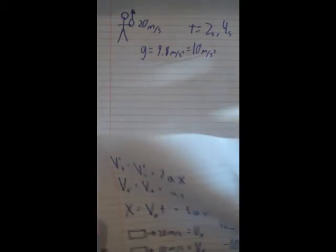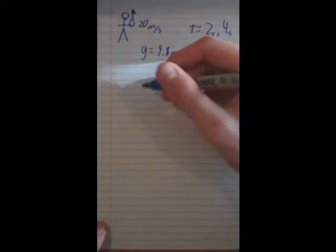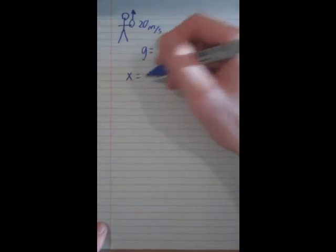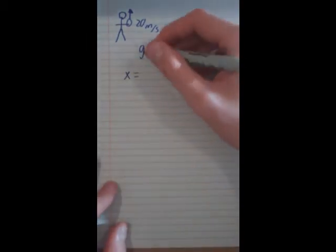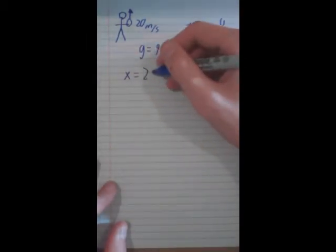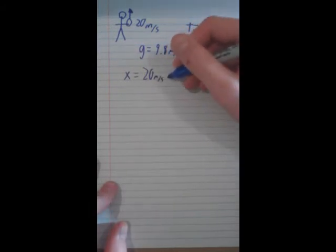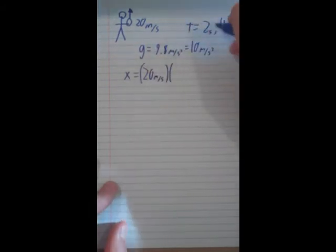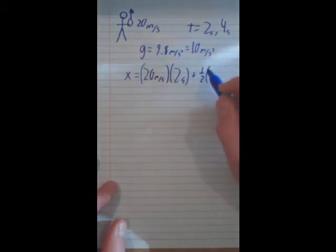Okay, so we know that's gravity, so we'll probably use this equation right here because that is all the units we have and looking for. So we're trying to find x after our velocity initial, which is 20 meters per second, times our time, which is 2 seconds, plus 1/2 a, which is going to be, and here's the tricky part.